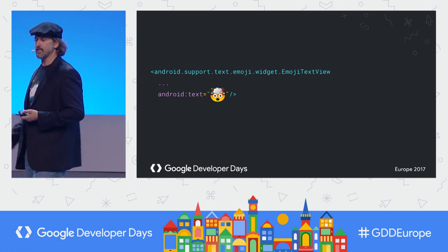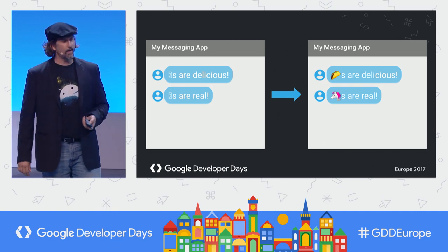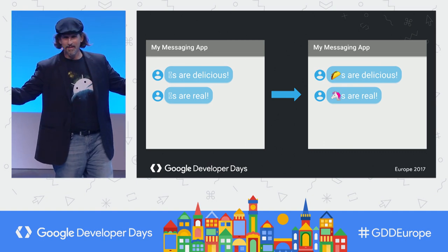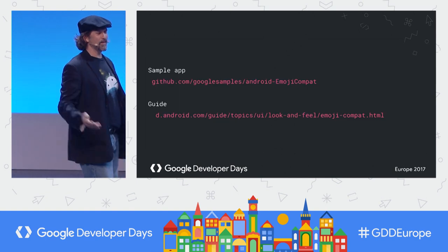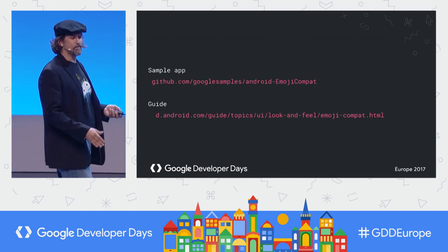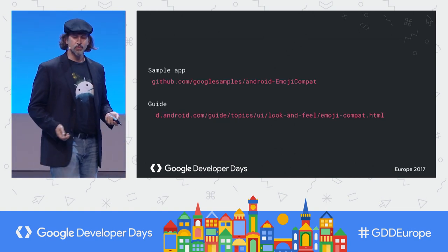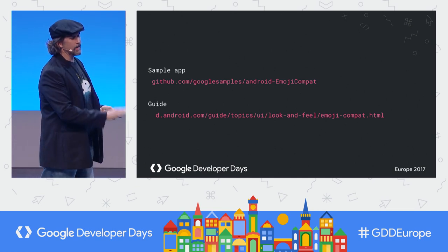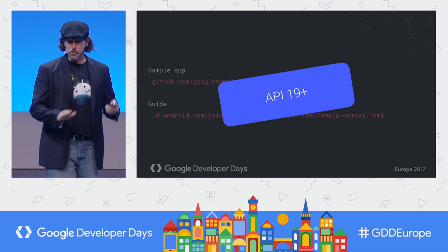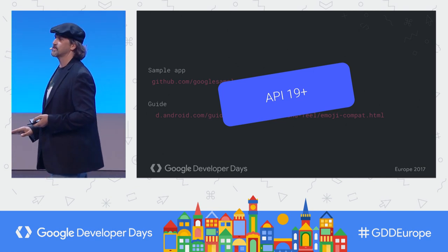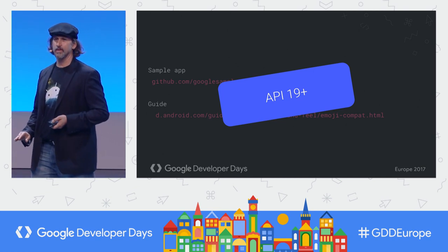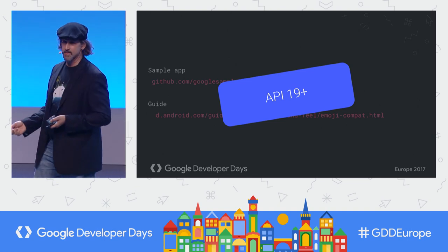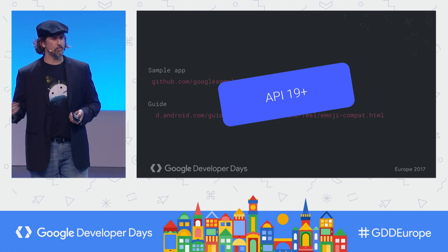We supply these views to help you out. Tacos and unicorns both now exist. Check out the sample on DAC for more information. One caveat: we didn't backport this all the way to KitKat — this requires API 19 plus. So you'll get tofu on some older devices.